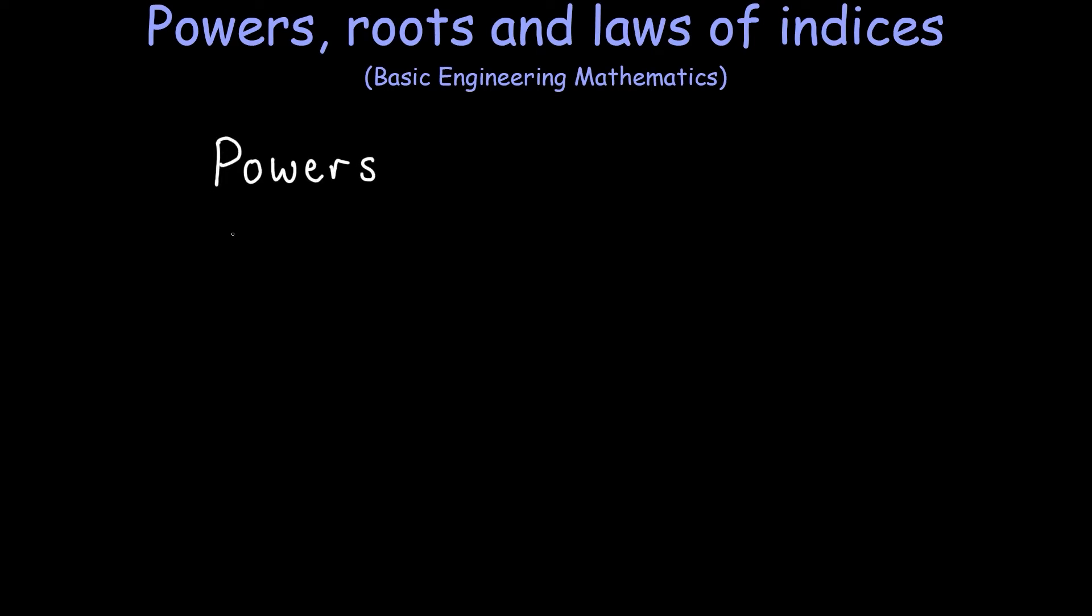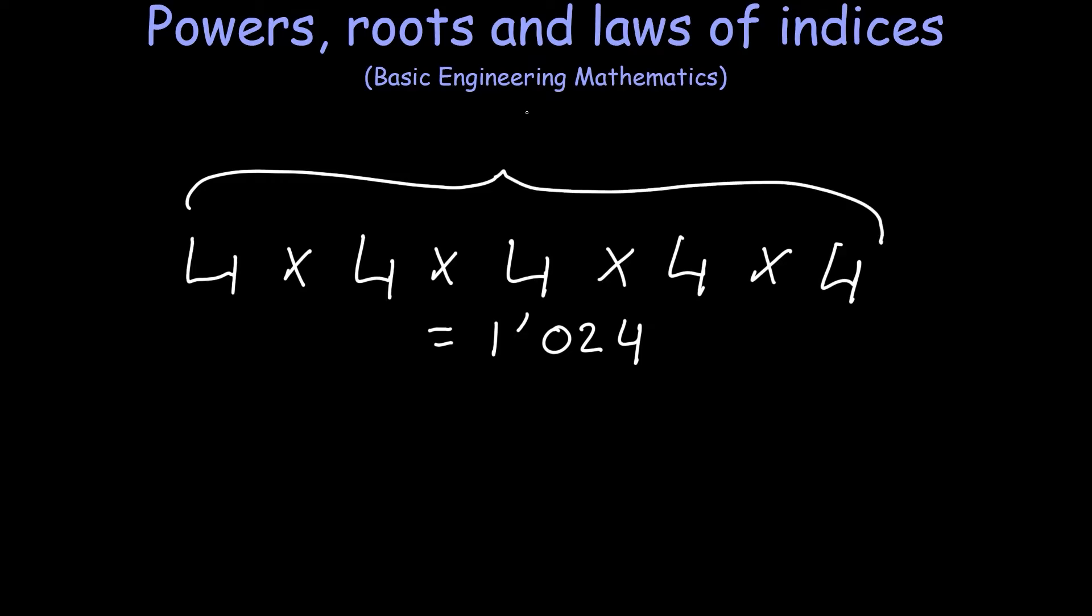In this lesson, I want to explain how you can manipulate powers and roots, since this is a crucial underlying skill you'll need in algebra, and I've written a couple of examples on the screen. If we take a whole number, say 4, and multiply it by itself 5 times, we get 1024, but we can also represent this in a shorter form, in this case 4 to the power of 5.